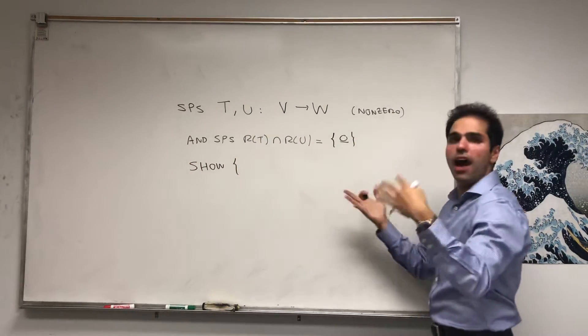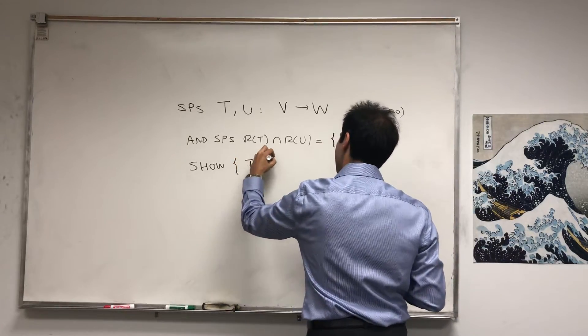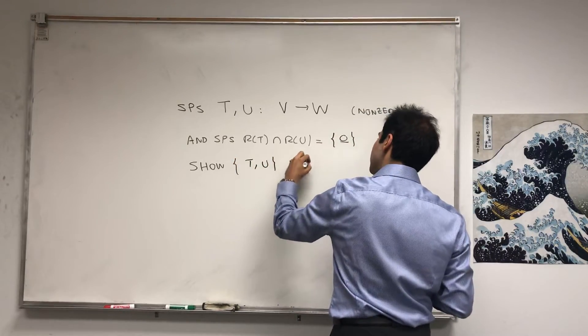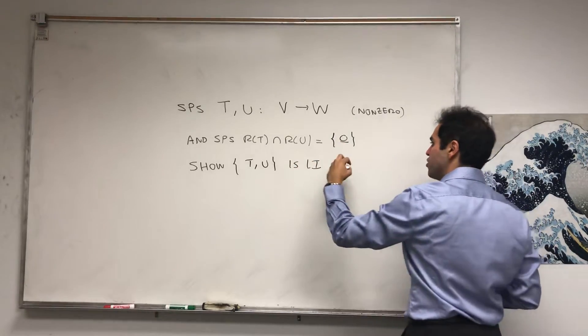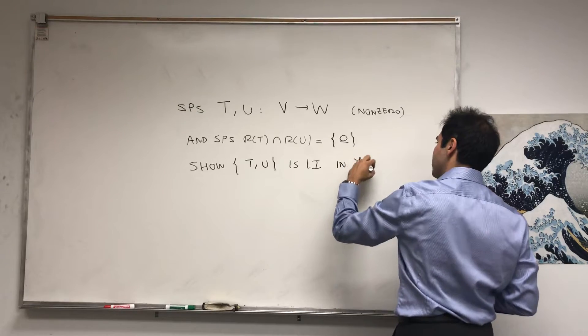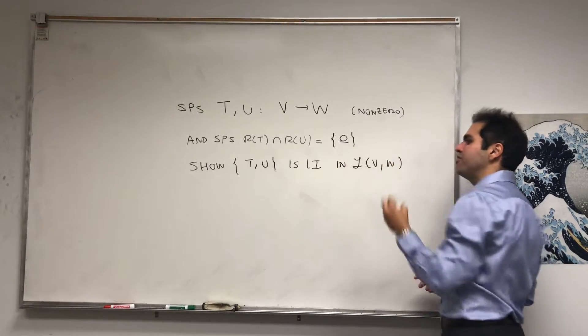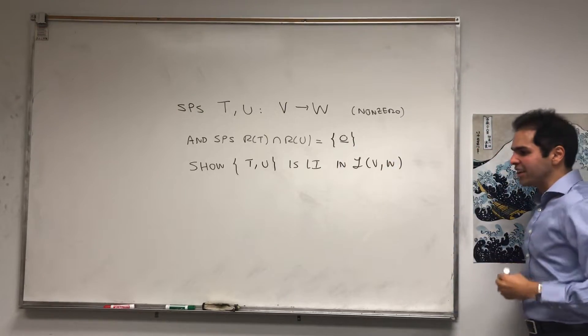And let's show that it turns out T and U have to be independent of each other. So let's show that the set {T, U} is linearly independent in the space of linear transformations from V to W.